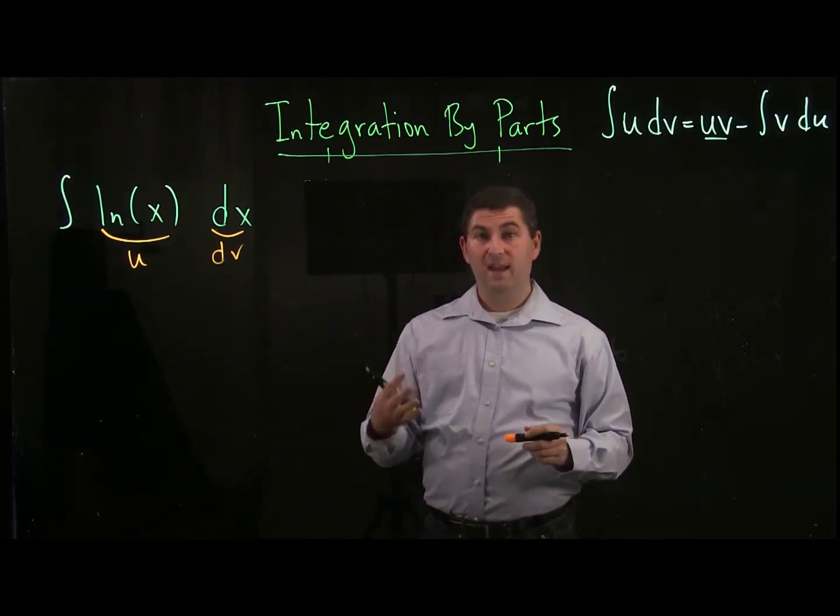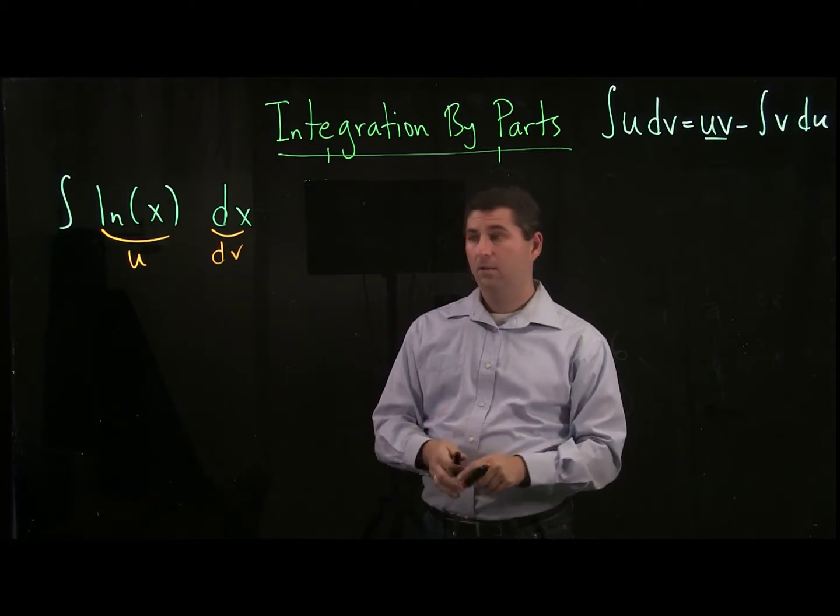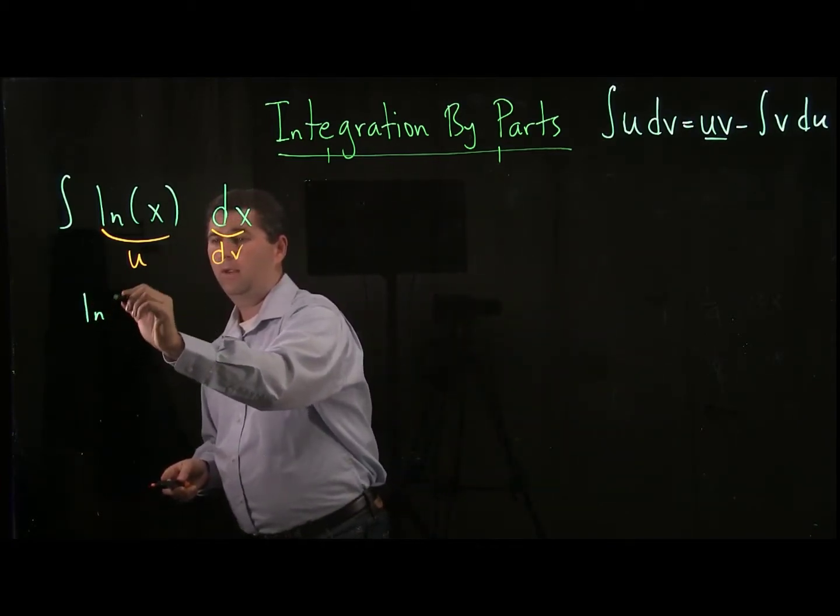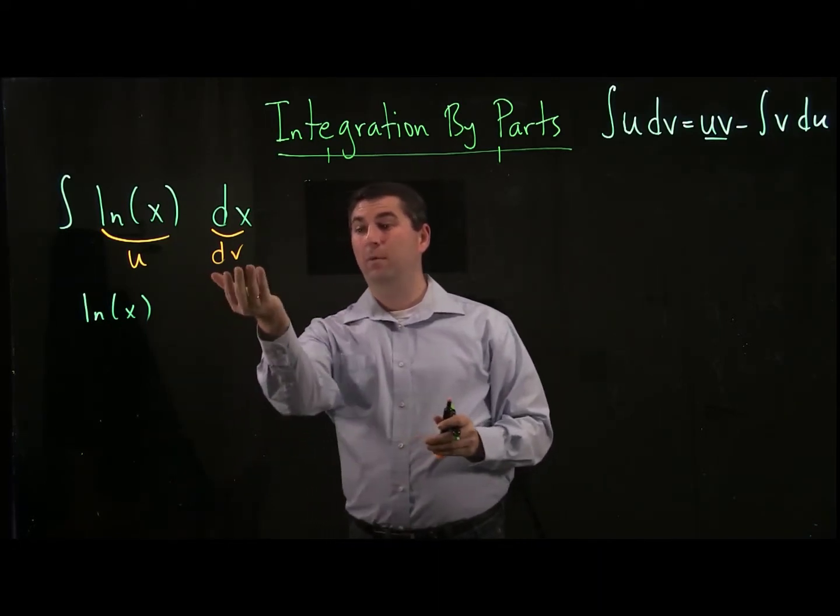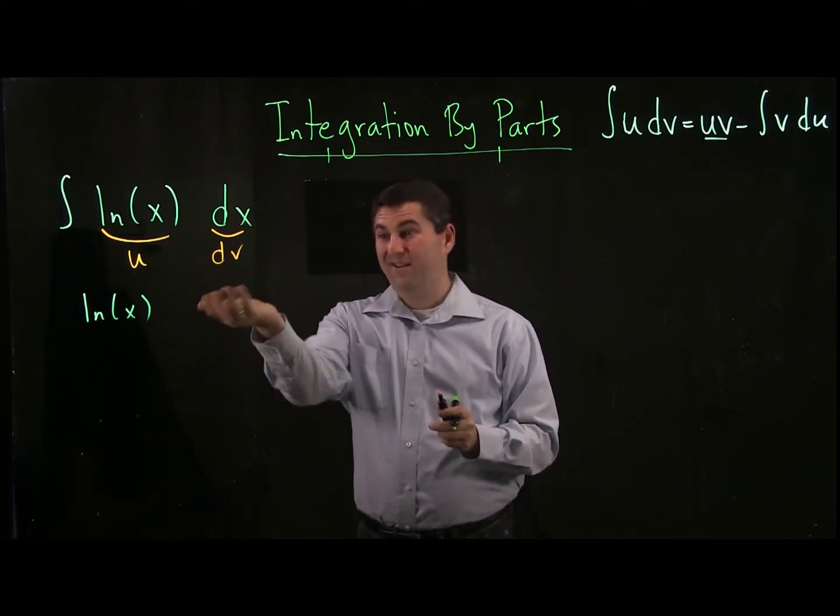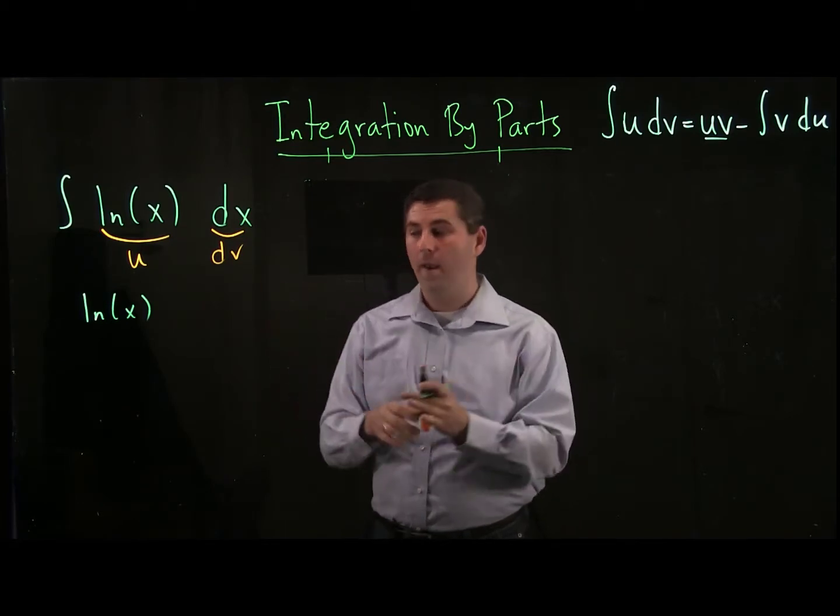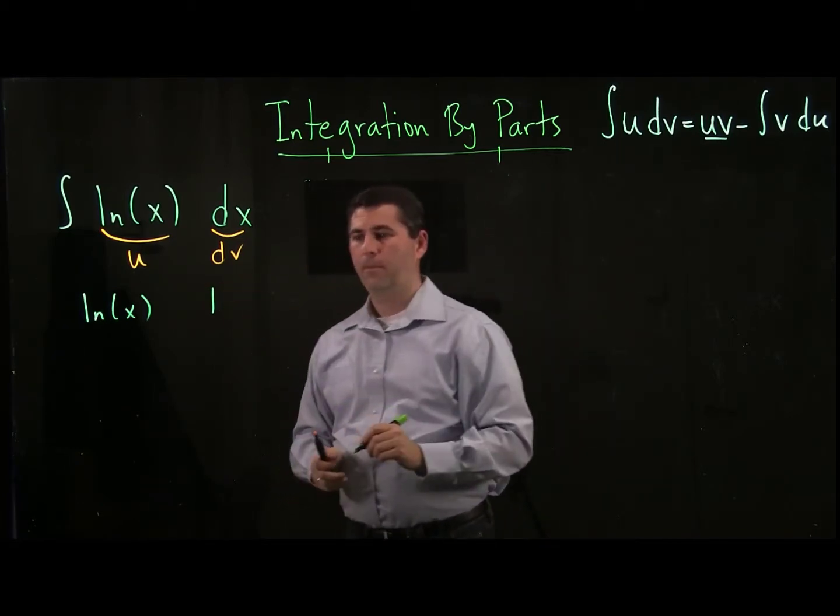If we try to write this down in the tabular method style, then what we would do is write our u ln of x and we write our function that we multiply by dv, which in this case there is nothing to multiply by other than 1. So we'll write the 1.